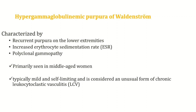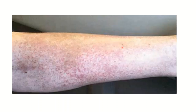The next cause of petechiae is hypergammaglobulinemic purpura of Waldenström. This condition is mainly seen in middle-aged females and presents with purpura on the lower extremities, raised ESR, and polyclonal gammopathy. Histopathology from the lesion shows features similar to LCV, which will be discussed in subsequent slides. Clinically, there is petechiae with mild erythema in bilateral legs.